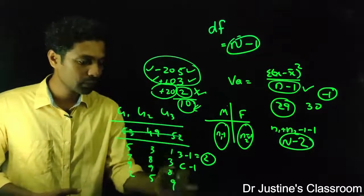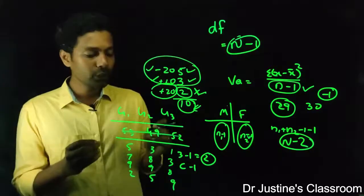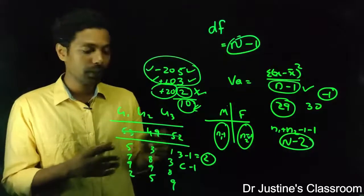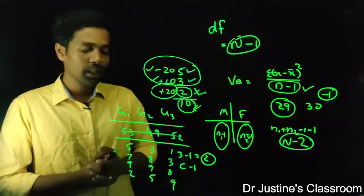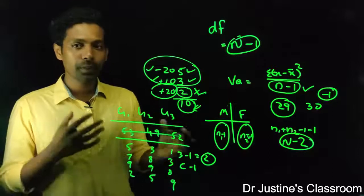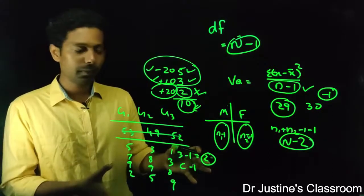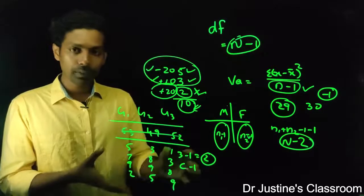So what is the within group variance according to ANOVA? We'll talk in detail about ANOVA between group and within group variance. For the sake of explaining the degree of freedom, I'm using this example.